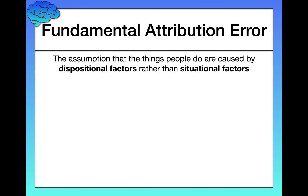The fundamental attribution error is a cognitive bias — a bias in how we think — in which we assume that the things people do are caused by dispositional factors, internal things about them such as their personality, rather than situational ones, which are external forces such as social pressures or circumstances.